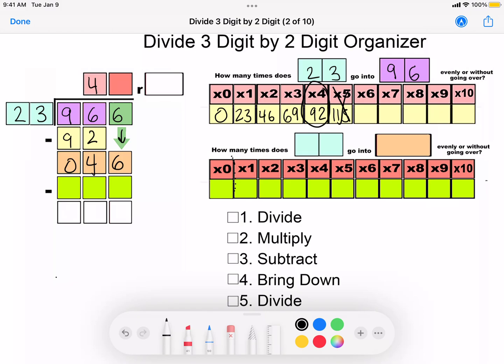Then how many times does 23 go into 46? We use our chart again: 23, 46. Perfect match. Two on top, 46 on the bottom. So 996 divided by 23 is 42, and this helps with everything they're going to do.